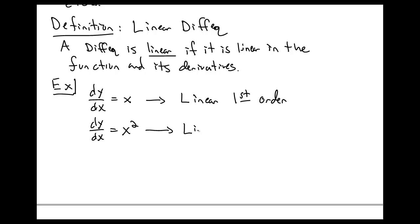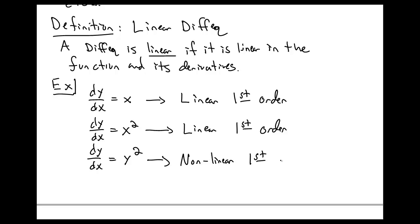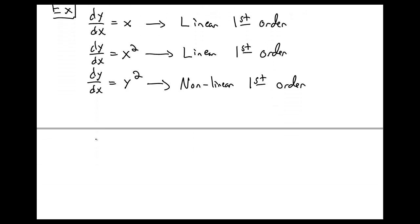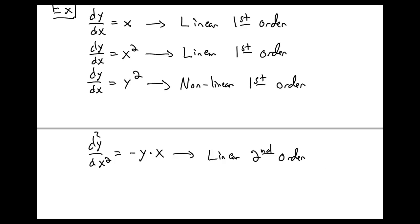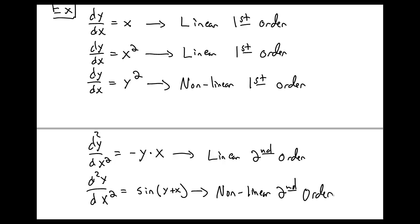dy/dx equal to x squared is linear and first order still. dy/dx equal to y squared is actually nonlinear but first order. The nonlinearity comes from the y squared, but it's still a first order derivative. d²y/dx² equal to minus y times x is actually linear and it's a second order equation — we have a second order derivative, but everything is still linear in y. But if you had d²y/dx² equal to sine of y plus x, this is nonlinear and second order.